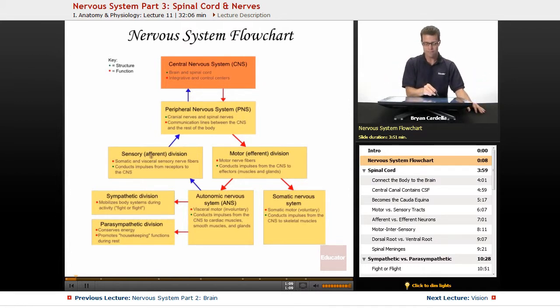The way that I keep the words afferent and efferent straight is I think of it alphabetically in terms of the brain being up top, kind of like the top of the alphabet. And so A has to do with going up to the brain. Afferent is all of these sensory signals. Efferent is going down, going out.